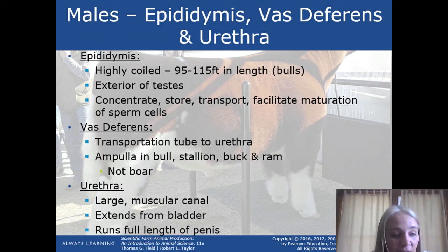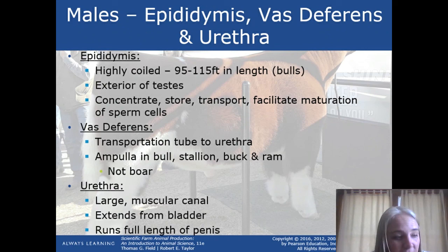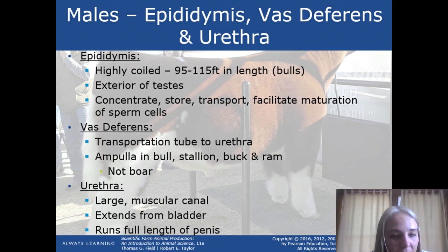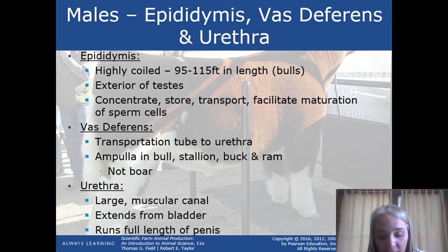The epididymis empties into a larger tubule called the vas deferens, which is essentially a transportation tube. It carries sperm fluid from the epididymis into the urethra. The widened end of the vas deferens is called the ampulla, which is found in a bull, stallion, buck, and ram — but not in a boar. Finally, the urethra is a large muscular canal that extends from the bladder. Just like in females, the reproductive tract and urinary tract join together, and the urethra runs the full length of the penis.